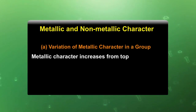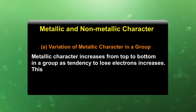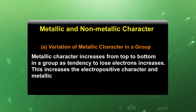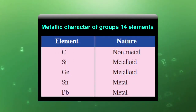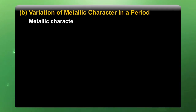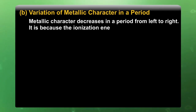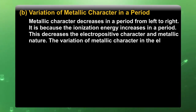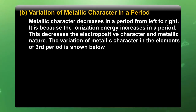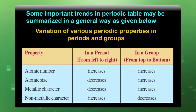Metallic character increases from top to bottom in a group, as the tendency to lose electrons increases, which increases the electropositive character and metallic nature. This variation can be seen in group 14. Metallic character decreases in a period from left to right, because ionization energy increases across a period, decreasing the electropositive character and metallic nature. The variation of metallic character in the elements of the third period illustrates the decrease. This table indicates how atomic number, atomic size, and metallic and non-metallic character increase or decrease in groups and periods.